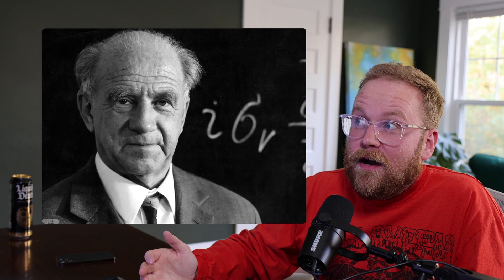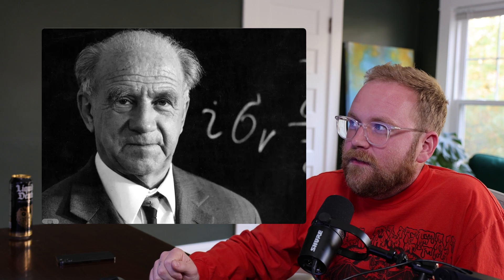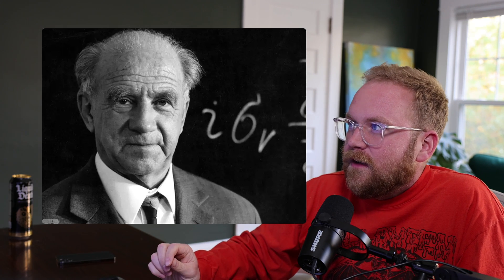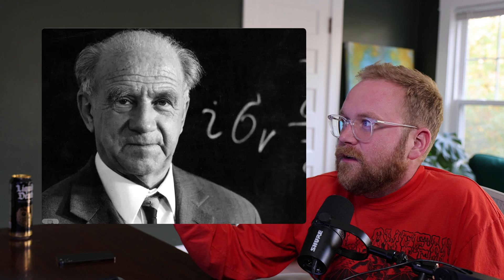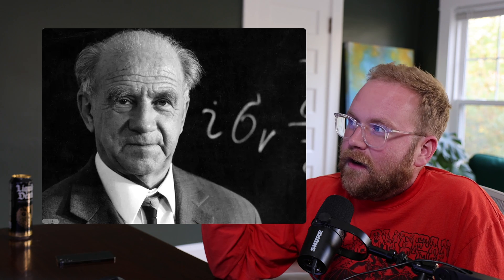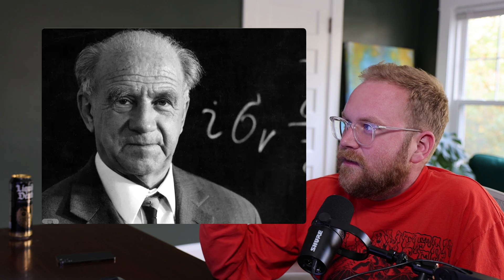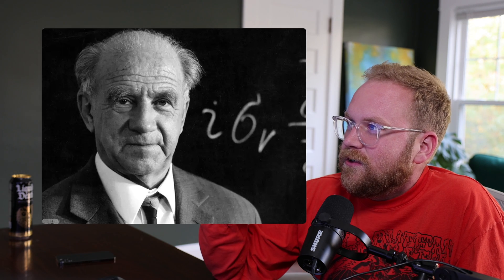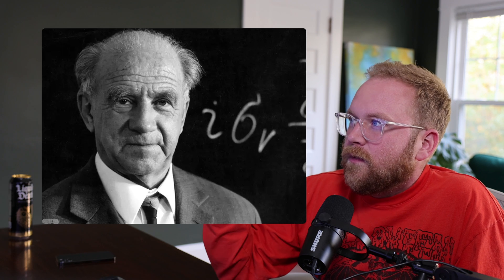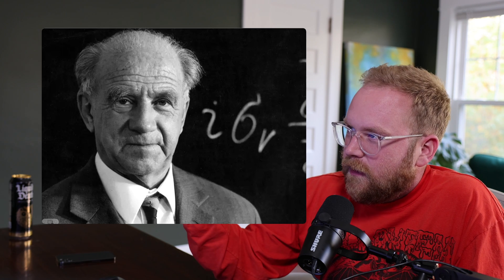The first is called a Heisenbug. This is a bug that alters its behavior when it's being investigated. It's named after Werner Heisenberg, who published his Uncertainty Principle in 1927. The Heisenberg Uncertainty Principle states that you cannot simultaneously know the exact position and momentum of a particle — the more precisely you know one of these values, the less precisely you can know the other.